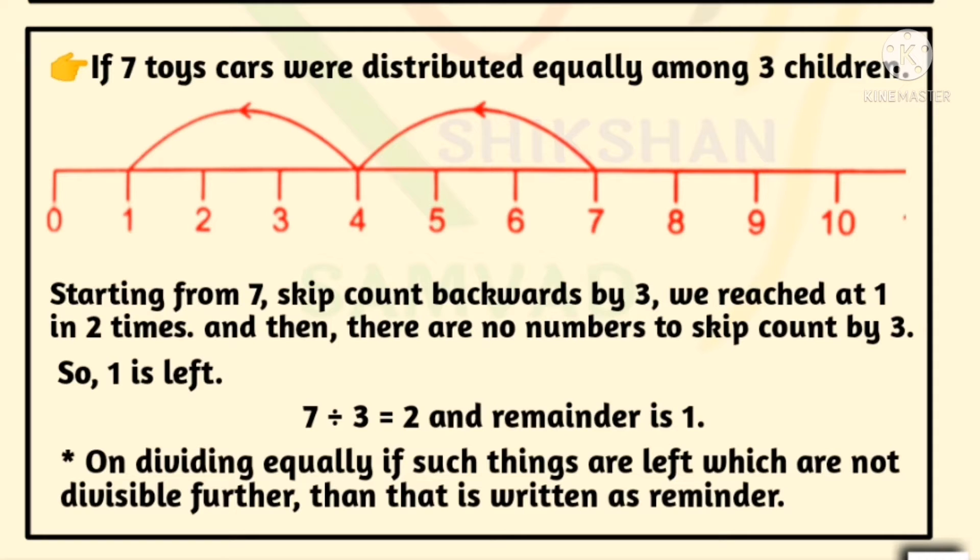If 7 toy cars were distributed equally among 3 children, starting from 7, skip count backwards by 3. We reached at 1 in 2 times, and then there are no numbers to skip count by 3. So 1 is left. 7 divided by 3 equals 2 and remainder is 1.